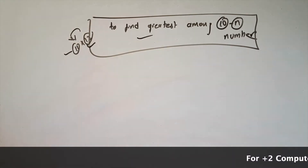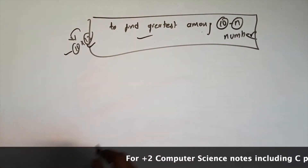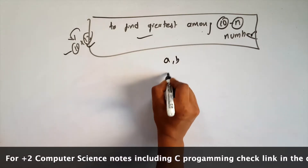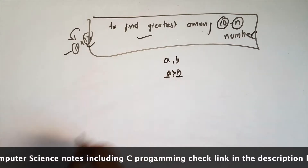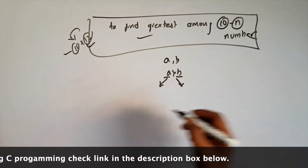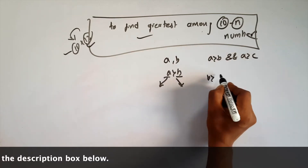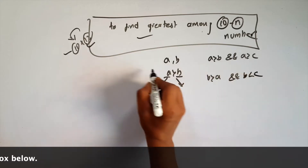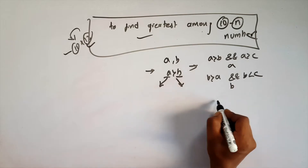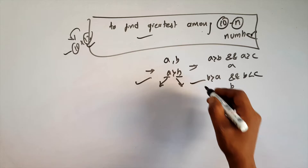The first question: to find the greatest among 10 numbers. What is the greatest number? If a is greater than b, a is the greatest. This is the simple form among three numbers: a is greater than b, b is greater than c, and c is the third number.